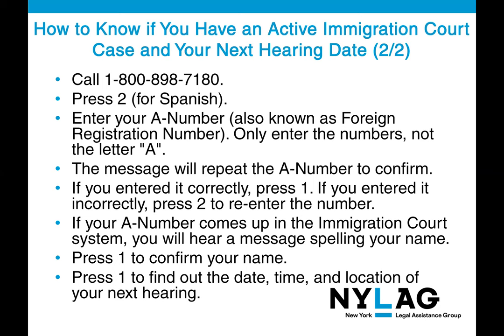You can also call the EOIR hotline number. Once connected, press 2 for Spanish if needed. Enter your A number — also known as a foreign registration number or alien number — through the phone keypad. Enter only the numerals, not the letter A. The message will repeat the A number to confirm; press 1 if correct, press 2 to re-enter. If your A number comes up in the immigration court system, you will hear a message spelling out your name. Press 1 to confirm, then press 1 again to find out the date, time, and location of your next hearing.